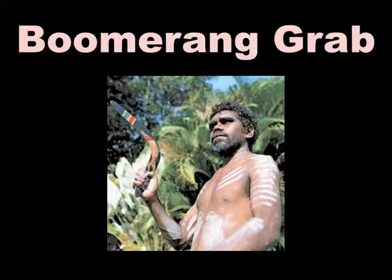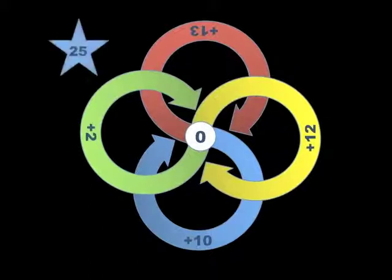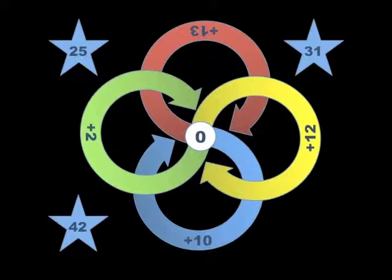Now we're going to give our boomerang thrower even more options. He's got four different throws that he can choose from. We're going to ask for volunteers, and we're going to get the children to come up one at a time and give a number. The first child, I want you to say the number has to be between 20 and 30, second between 30 and 40, 40 and 50, and some number under a hundred.